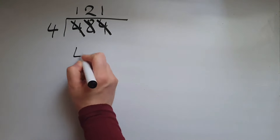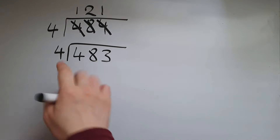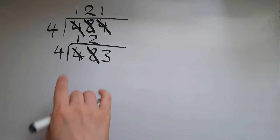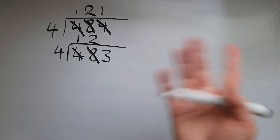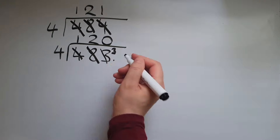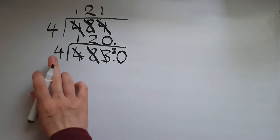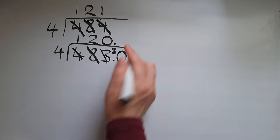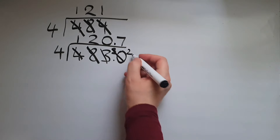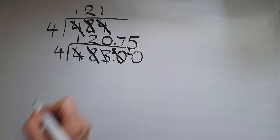What if we had 483 divided by 4? How many 4s fit into 4? That's one, nothing remaining. How many 4s into 8? That's two, nothing remaining. How many 4s into 3? None — zero — but we still have 3 remaining. We've run out of digits, so we put a decimal point. We can add zeros because zeros after the decimal point have no value. 4 into 30 is 7, because 7 times 4 is 28, so we have 2 remaining. How many 4s into 20? That would be 5, and there's nothing remaining.